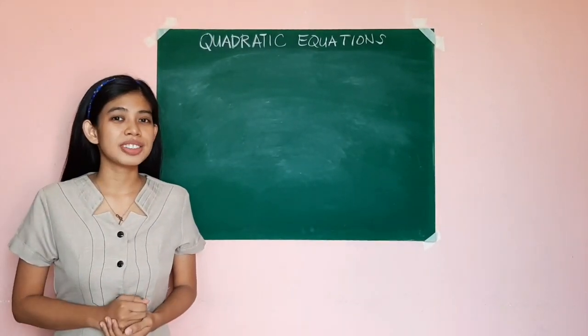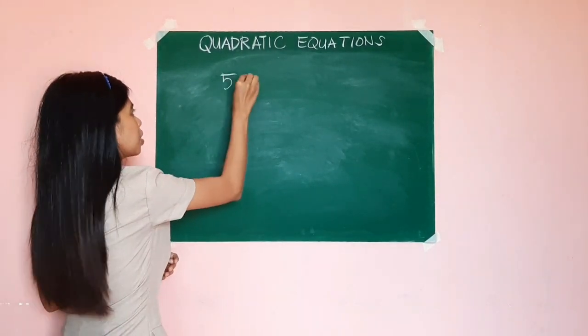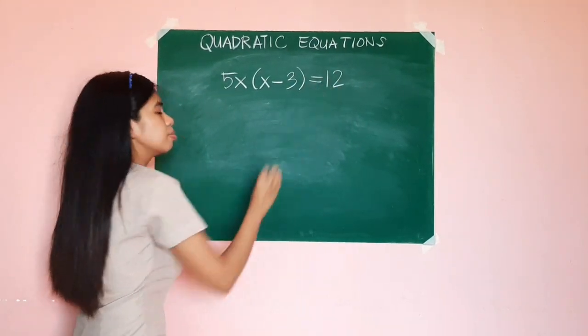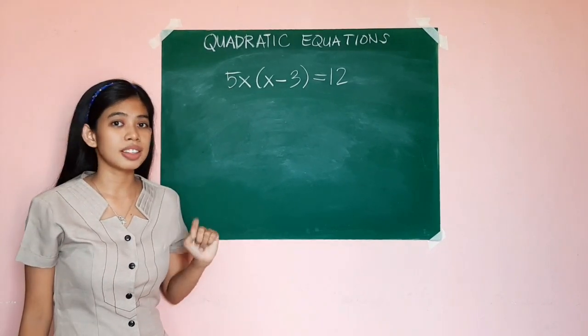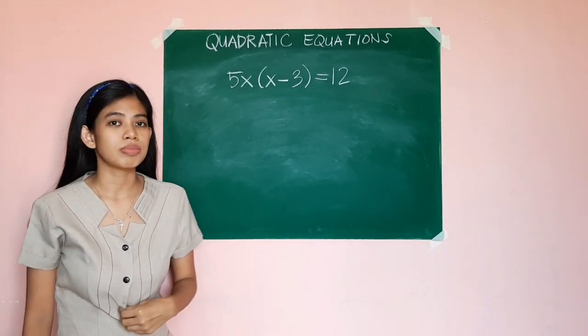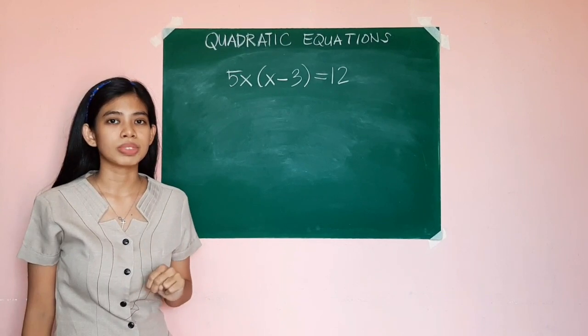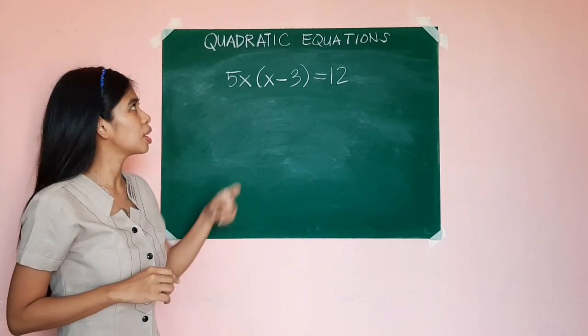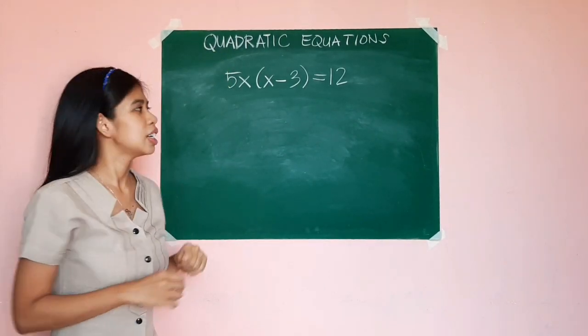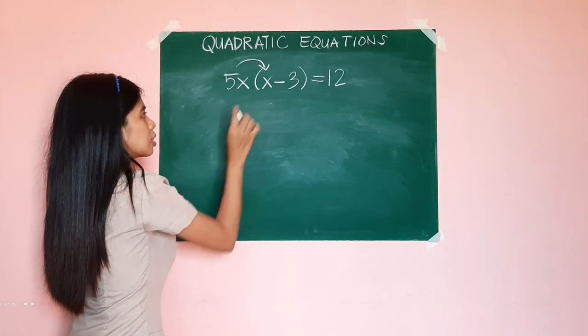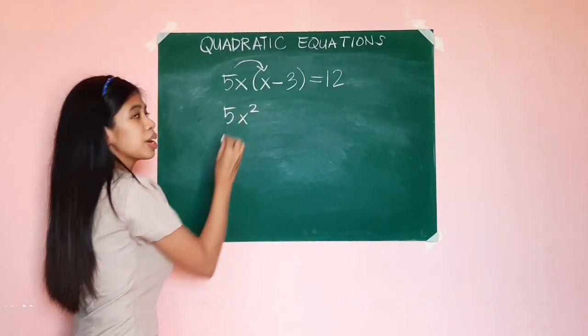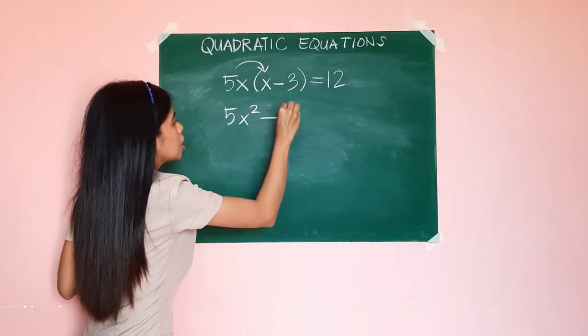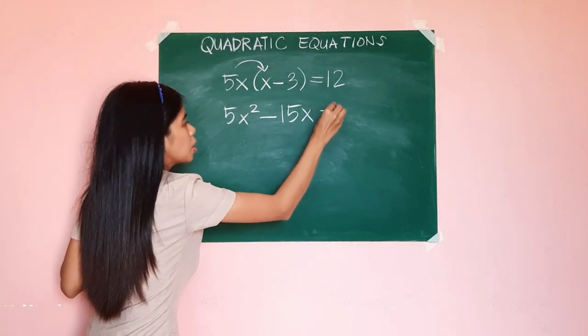Let us proceed to the second example. Suppose you were given 5x times (x - 2) = 12. At first, we might think that this is not a quadratic equation since we cannot see the exponent 2. But applying the distributive property of multiplication over subtraction, we are going to get a quadratic equation. So 5x times x would give us 5x², and 5x times negative 3 would be negative 15x equals 12.